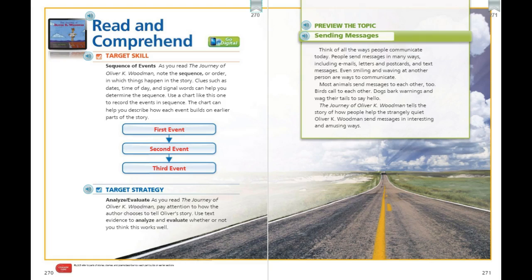Understanding how characters' actions determine the order or sequence of events in a story can help you better understand the story. Clues like dates, time of day, and signal words can help to determine that sequence. You can use a chart to record the events in sequence, and it can help you describe how each event builds on earlier parts of the story.